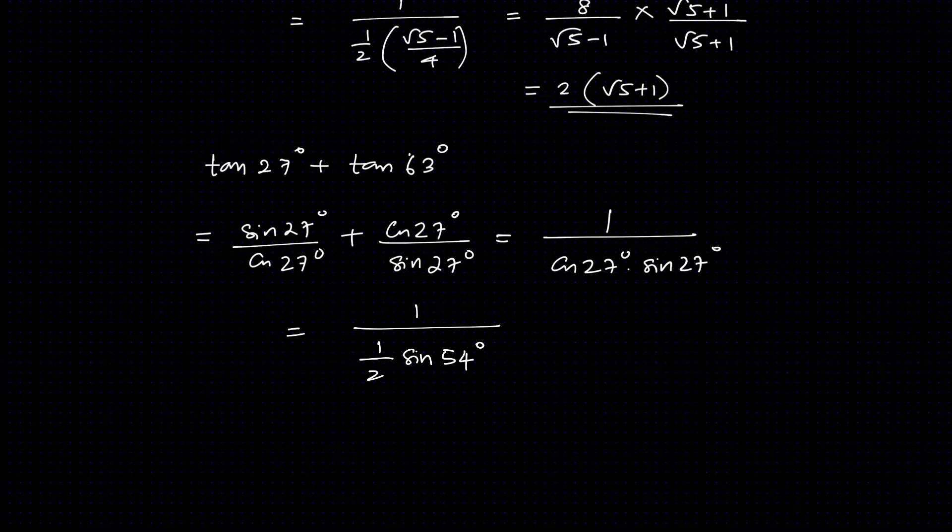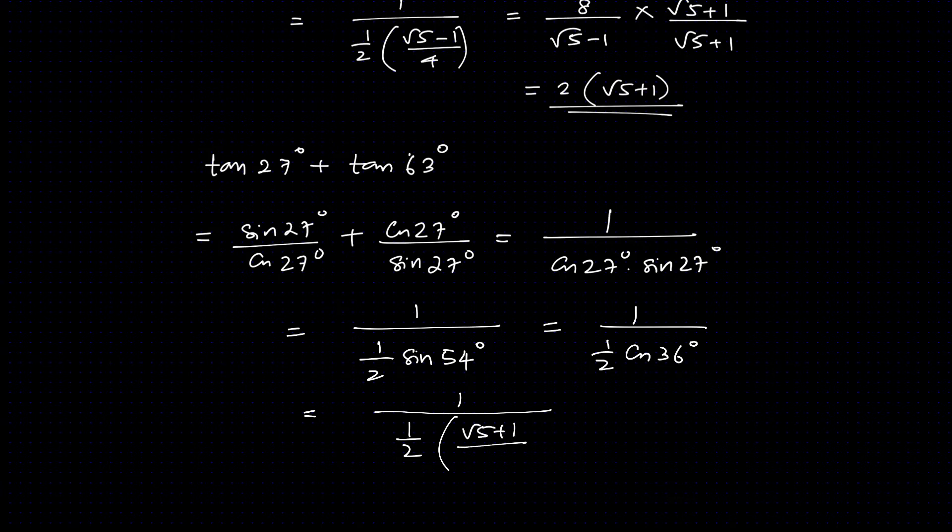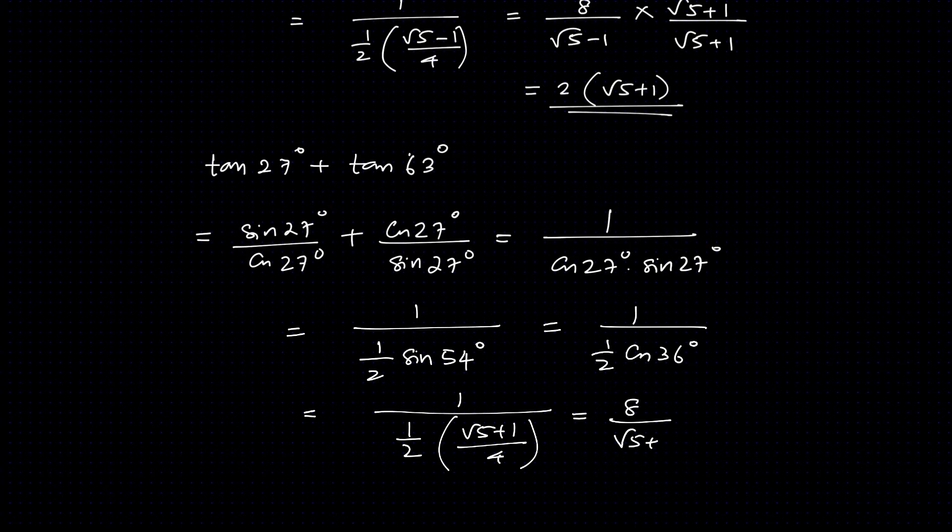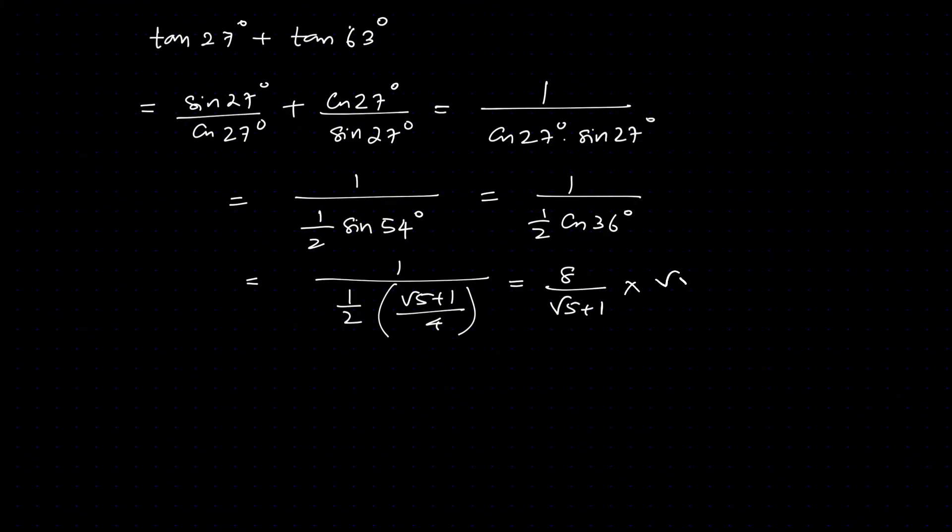So this is 1 by half of cos 36 degrees, which is 2 by root 5 plus 1 by 4. This is 8 divided by root 5 plus 1. Now when you take conjugate into the denominator, simplify root 5 minus 1 by root 5 minus 1. This gives 2 into root 5 minus 1.